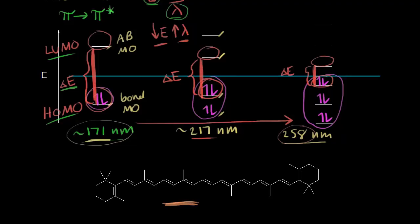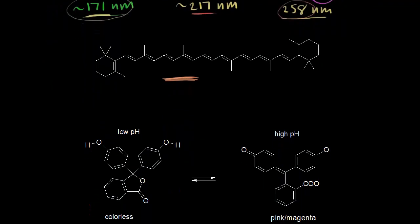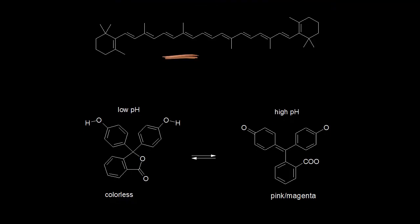Let's move on to one more example: phenolphthalein, which is probably the most famous acid-base indicator. If you've taken a general chemistry lab, you've likely used phenolphthalein for acid-base titrations. At a low pH in an acidic environment, phenolphthalein is colorless. But if you add base and increase the pH, you see a pink or magenta color.